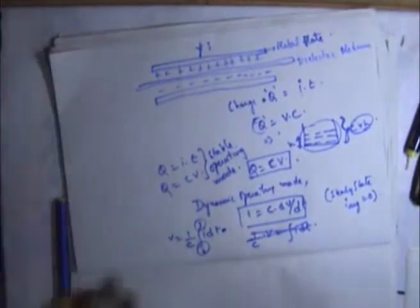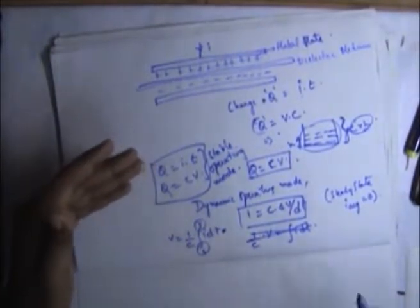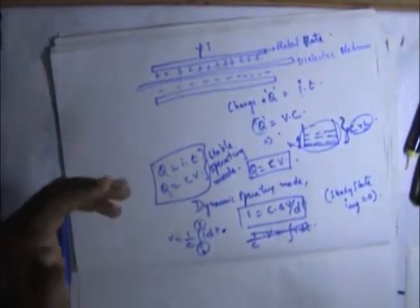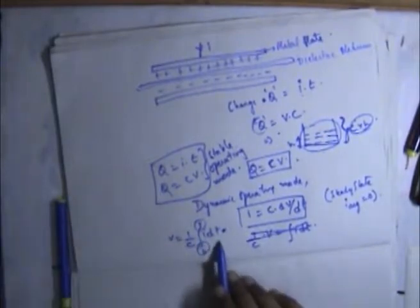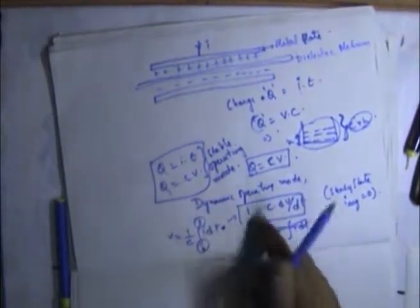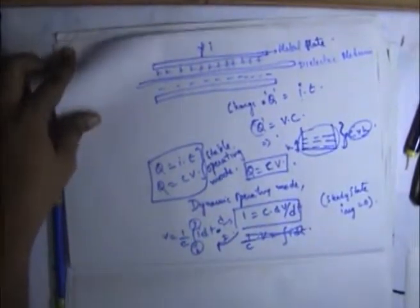Friends, please note these equations: Q equals I times T, Q equals C times V. In dynamic operating mode, when there are transients, V equals 1/C times the integral of I·dt, or I equals C times dV/dt. If you differentiate, the first form comes into picture; if you integrate, the second comes into picture. That's how the equations are derived.